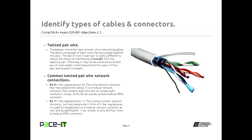Twisted pair is the most common of all networking cables. The cable is composed of eight wires twisted together in pairs, which is why it's called twisted pair. The twist rate of each pair is slightly different, which reduces the chance for interference between pairs — that's called crosstalk. In some cases all four pairs may have a metal or foil shield surrounding them, making it a shielded twisted pair. All pairs are contained within an outer insulating sheath.